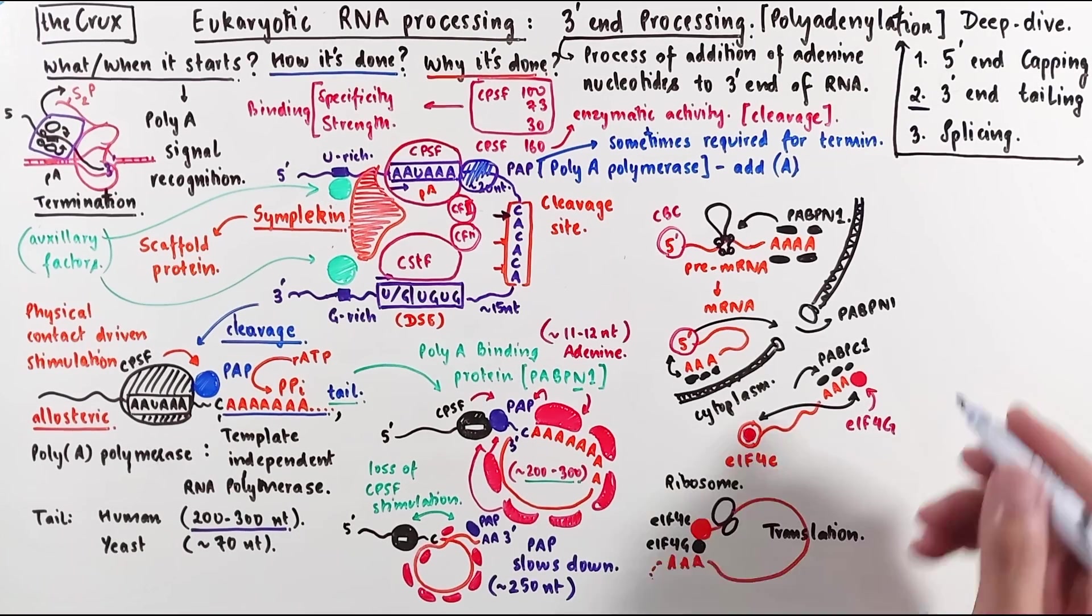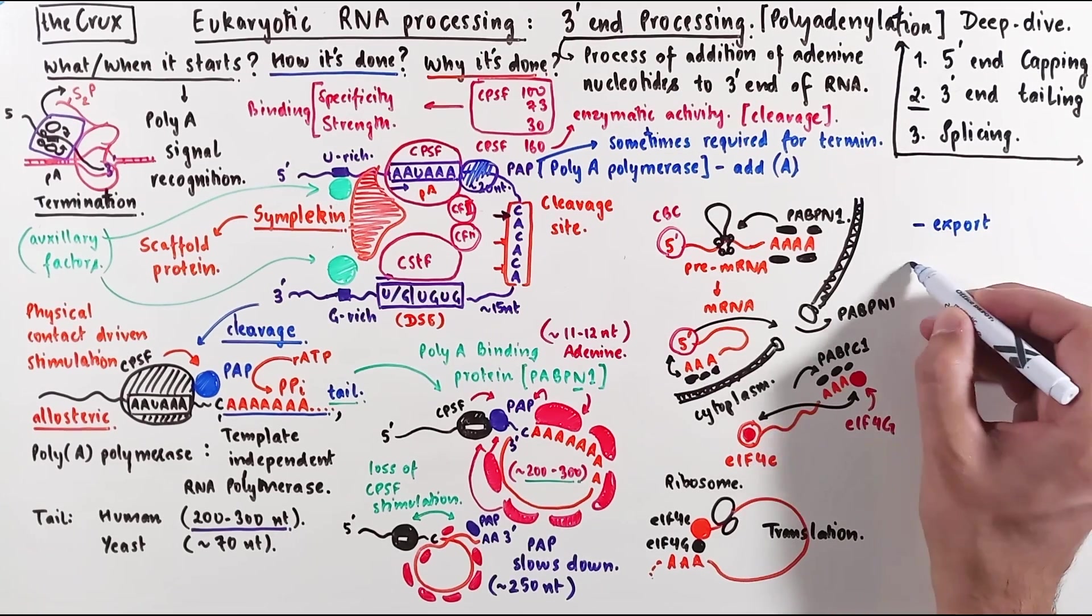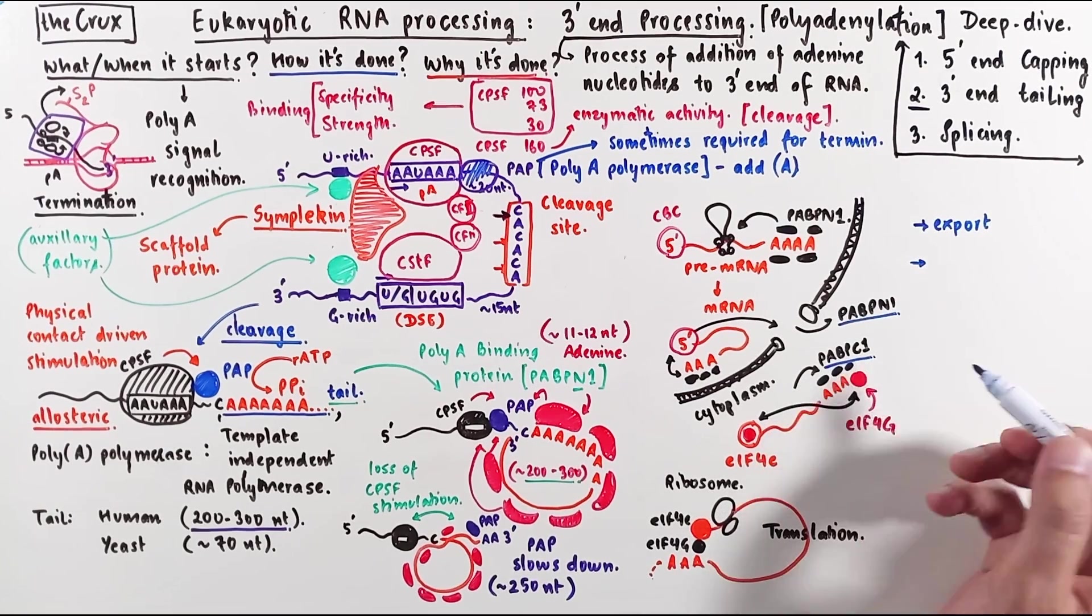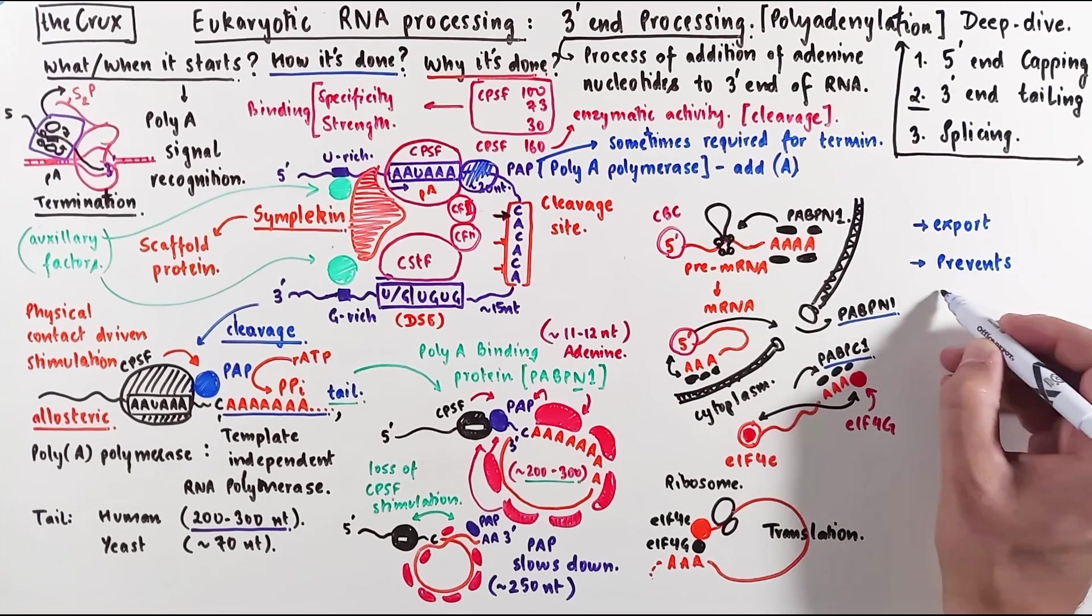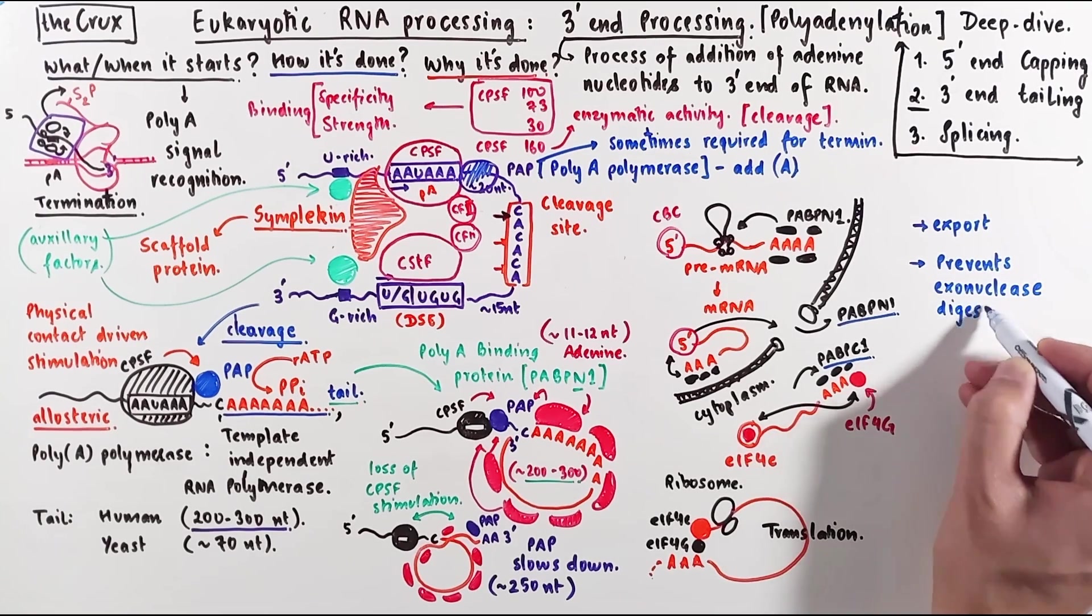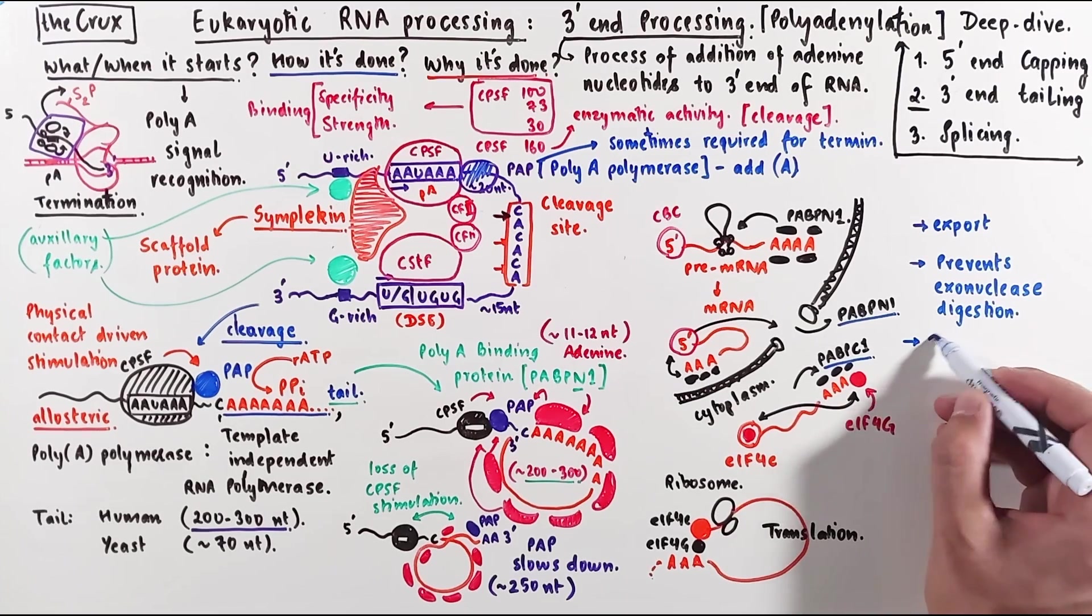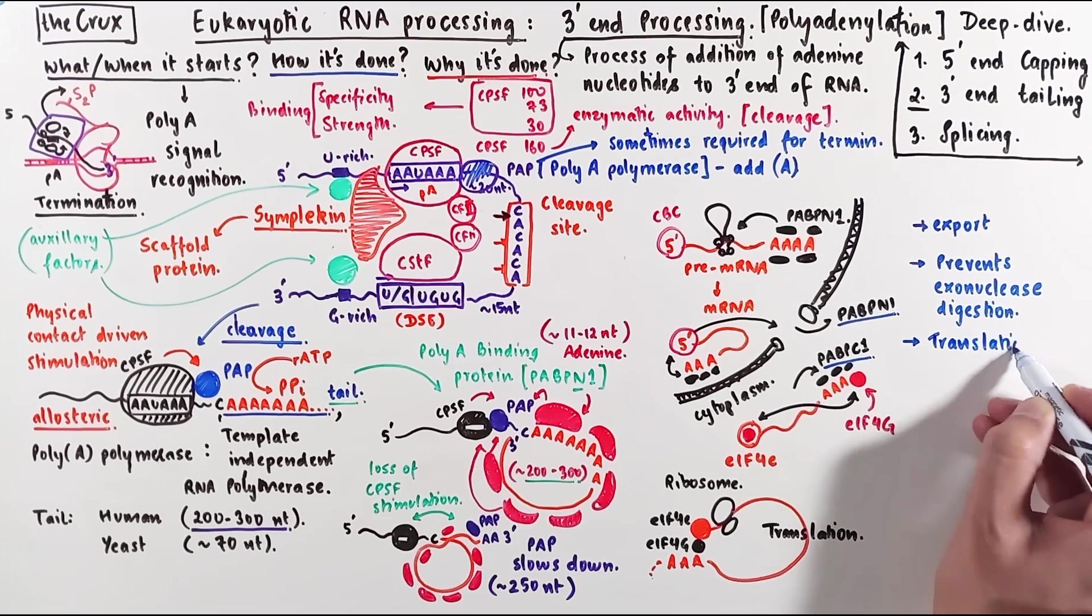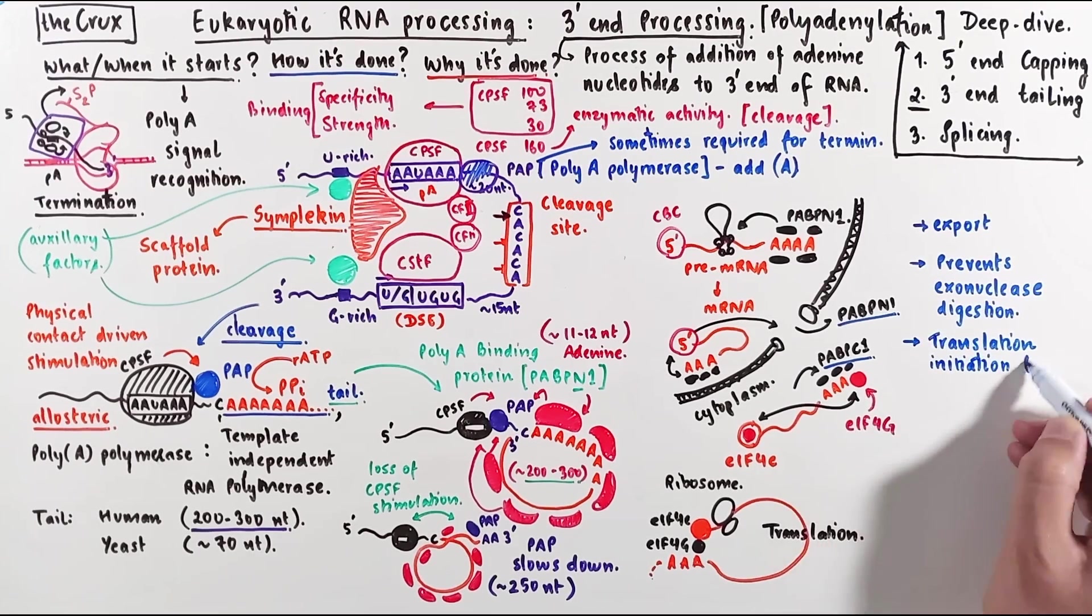So to sum up the advantages of polyA tail, it helps in the export of the RNA. And we also saw that it helps in the maturation of the RNA. And since polyA tails are bound by polyA binding proteins in both nucleus and cytoplasm, the polyA tail prevents the mRNA from exonuclease digestion. And we just also discussed that it helps in the process of translation initiation and it makes the whole process efficient.